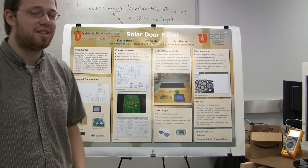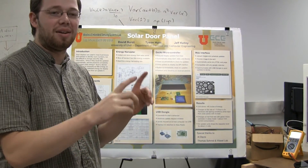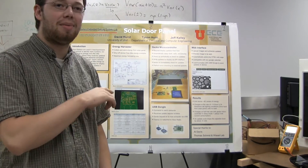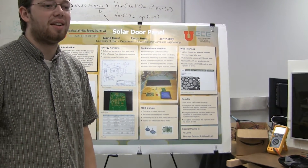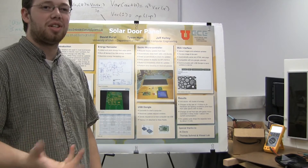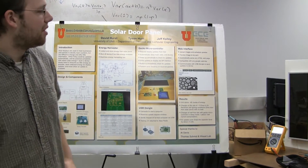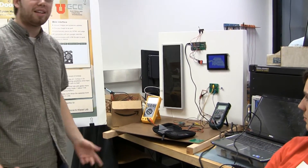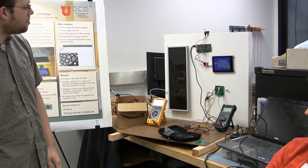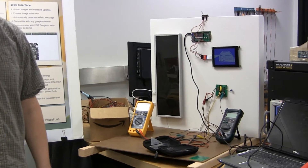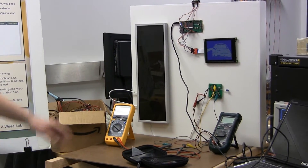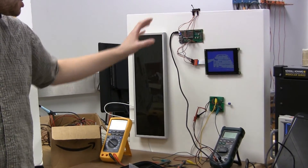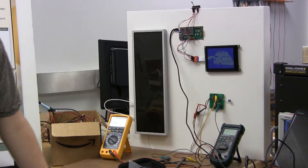Our goal in this project was to create a door display outside your door that would display your calendar or any other image you'd want to send to it, or on a conference room door it would show the schedule of that room. Here you can see our panel — it's an e-ink display, really low power. It actually uses no power when it's not updating the screen. We have a microcontroller board to manage the radio communications.